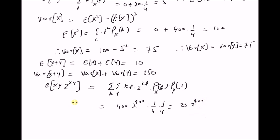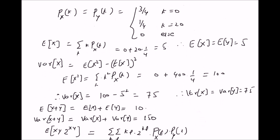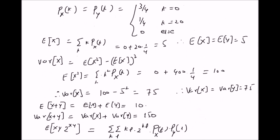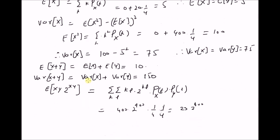Thus, given the probability mass functions of two independent and identically distributed random variables, it is possible to determine their various statistics and also the moments or the expectation of different functions of these two random variables. Thanks for watching.